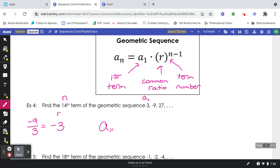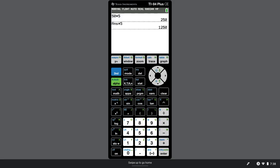And then you can just plug things into the formula. So a sub 14, meaning the 14th term, is equal to positive 3 times negative 3 for the r to the 14 minus 1. And I'm going to use my calculator to type that in. Let me show you how that works.